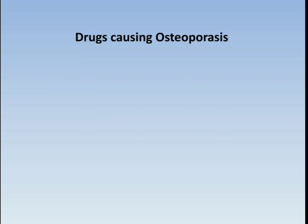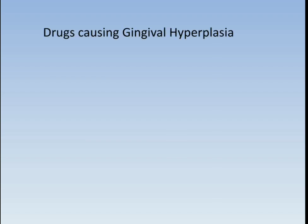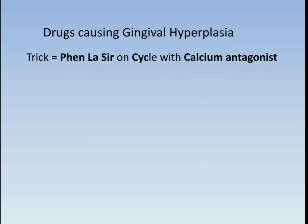The drugs causing osteoporosis — the trick is 'Go to Hell.' The trick sounds funny but you have to learn it. G denotes glucocorticoids, T denotes thyroxine, and H denotes heparin.